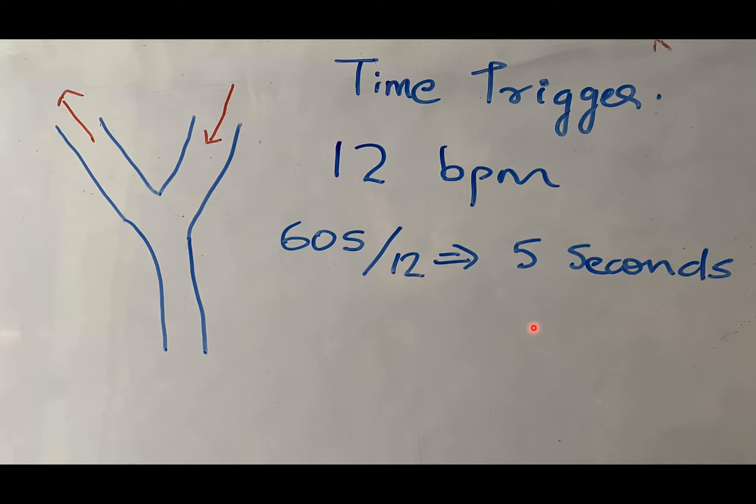For example, if we have set the ventilator at 12 breaths per minute — that is every 60 seconds 12 breaths — then every 5 seconds the ventilator will trigger a breath. At this time trigger interval, the ventilator automatically delivers one mechanical breath every 5 seconds without regard to the patient's breathing effort or requirement. So whether the patient is in an inspiratory or expiratory phase, every 5 seconds the ventilator delivers a breath. It is a type of controlled ventilation.